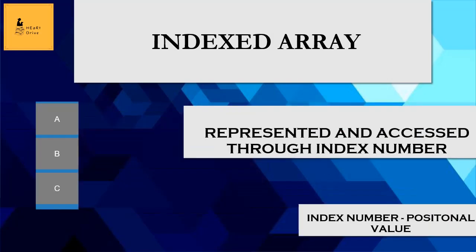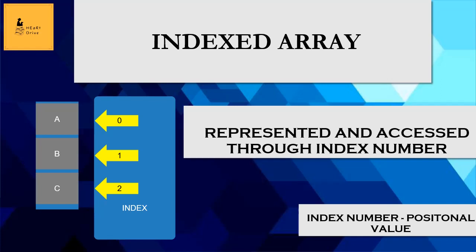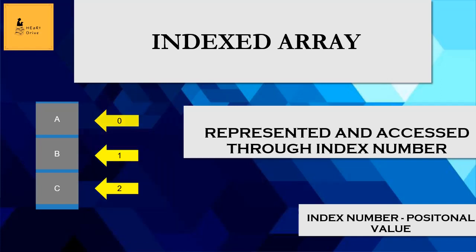In an indexed array, elements are represented and accessed using positional values called an index. The index number starts with 0.